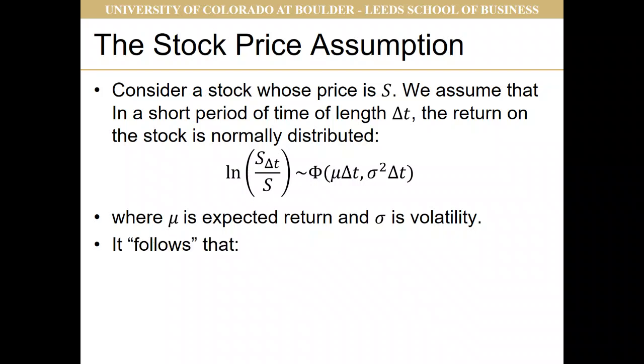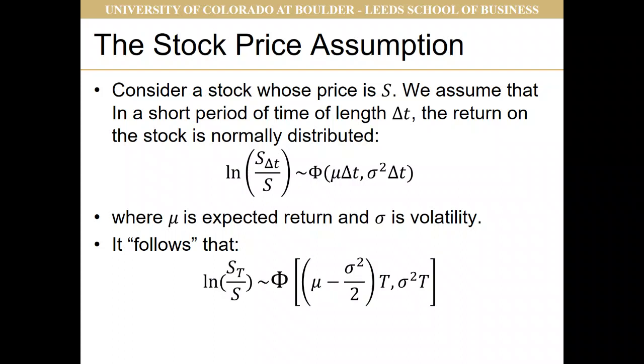It follows — and we're not going to prove this — that over a longer period of time, the log return, natural log of S_T (T being sometime in the future, say 6 months or a year) divided by S, is again normally distributed. The mean is a little different: it's (mu minus sigma²/2) times T, and the volatility is sigma²·T.